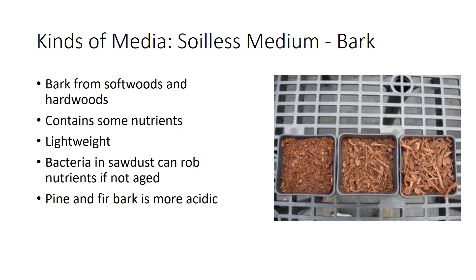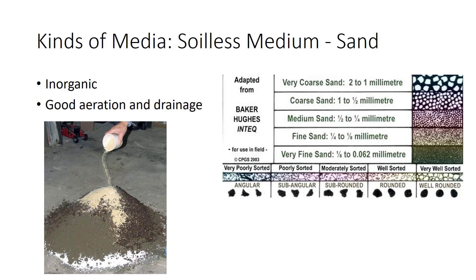Pine and fir bark is more acidic and may need a wetting agent. In addition to organic materials in soilless media, there are a number of inorganic materials that are mineral in origin, containing no carbon. Sand is a commonly used component in many potting mixes because it provides good aeration and drainage. Sand is easy to pasteurize and comes in a variety of particle sizes. Larger particle sand should be avoided because it may settle out in the mix and become compacted, which actually reduces the infiltration of water.